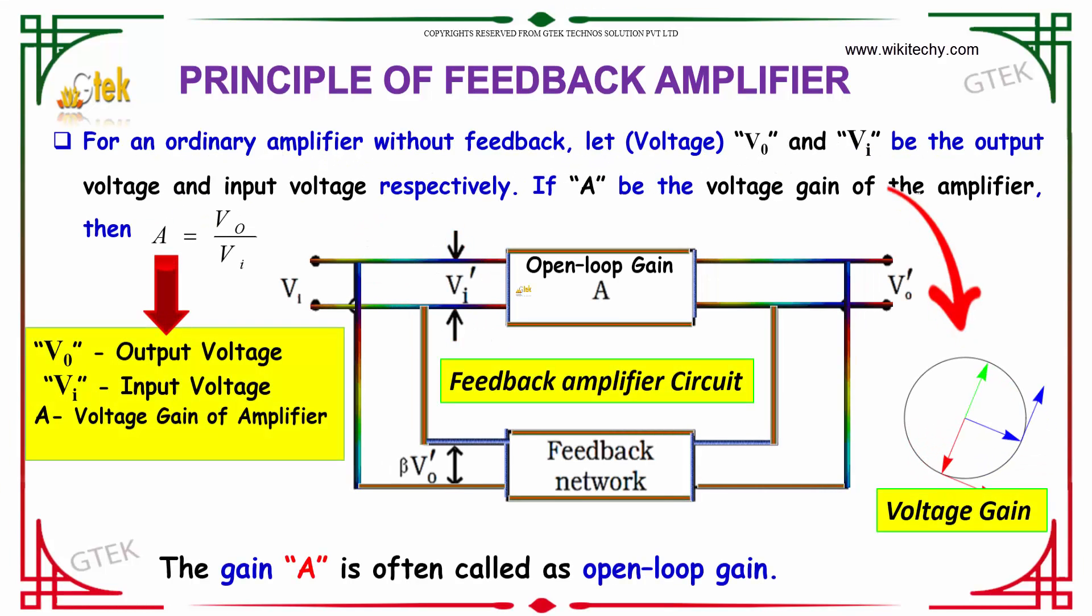For an ordinary amplifier without feedback, let voltage V0 and Vi be the output voltage and input voltage respectively. If A be the voltage gain of the amplifier, then A equals V0 divided by Vi.